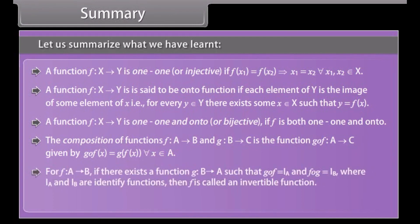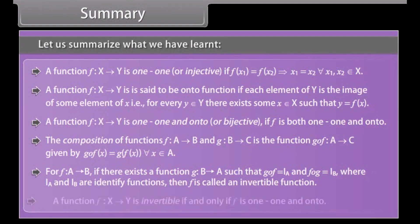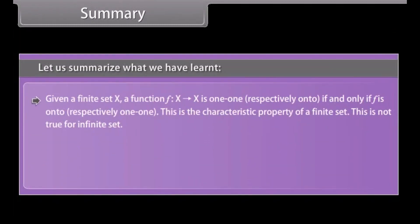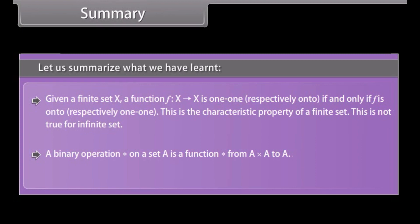For function f from A to B, if there exists a function g from B to A such that g∘f = I_A and f∘g = I_B, where I_A and I_B are identity functions, then f is called an invertible function. A function f from X to Y is invertible if and only if f is one-to-one and onto. Given a finite set X, a function f from X to X is one-to-one if and only if f is onto. This is the characteristic property of a finite set and is not true for an infinite set. A binary operation ★ on a set A is a function ★ from A cross A to A.